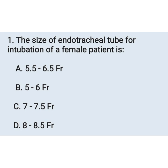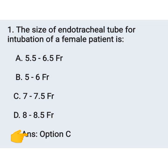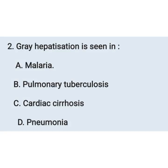First question: the size of endotracheal tube for intubation of a female patient is — option A: 5.5 to 6.5 French, option B: 5 to 6 French, option C: 7 to 7.5 French, option D: 8 to 8.5 French. The endotracheal tube size for a female patient is 7 to 7.5 French — option C is the correct answer.